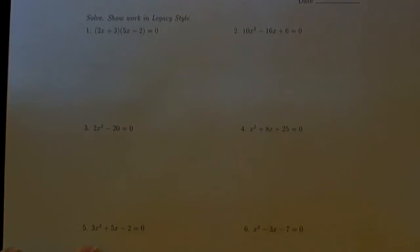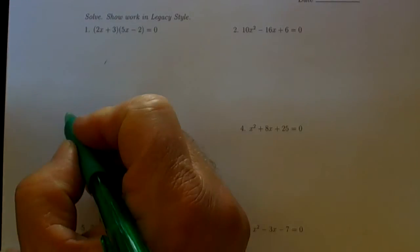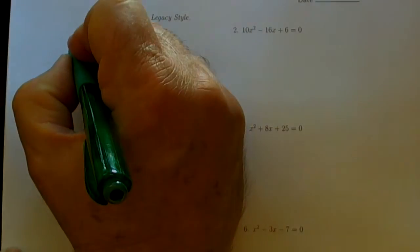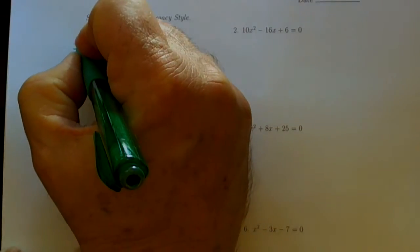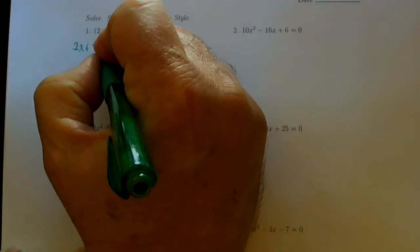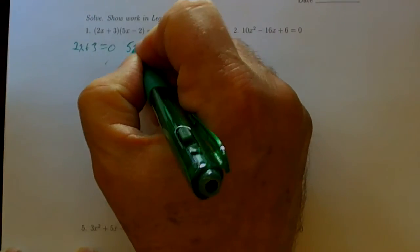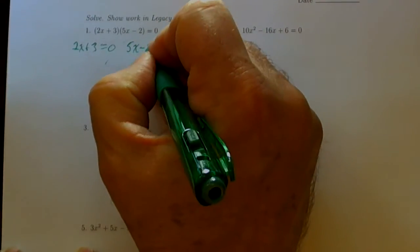Here's the first problem. These two binomials multiply together to give a quadratic, so most of the heavy lifting is already done here. Because these two things multiply together to give us zero, the zero product property assures us that either 2x plus 3 is equal to zero, or else the other factor, 5x minus 2, is equal to zero.